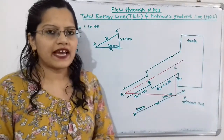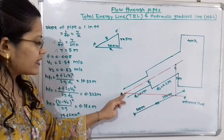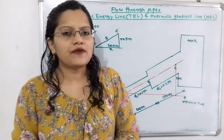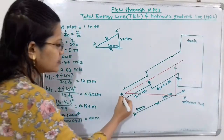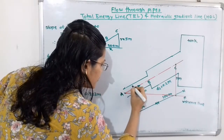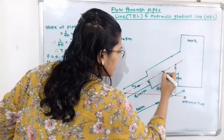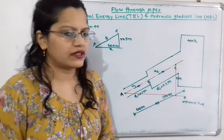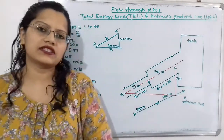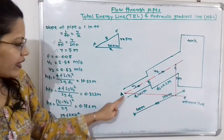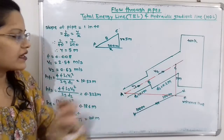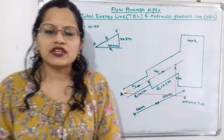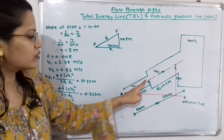Flow is in the direction from point A to C. The pipe has different cross-section areas, so velocity in pipe AB is V1 and in pipe BC is V2. When water flows from A to B, there are losses due to friction, and the coefficient of friction f is given. We calculate head loss due to friction HF1 = 4FL1V1²/(2GD1).